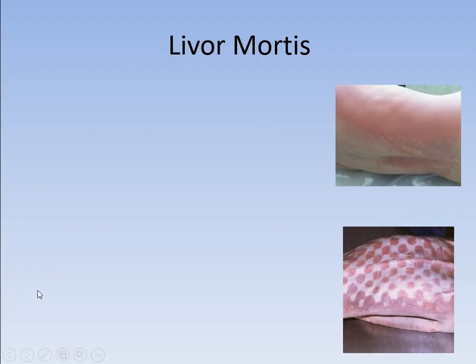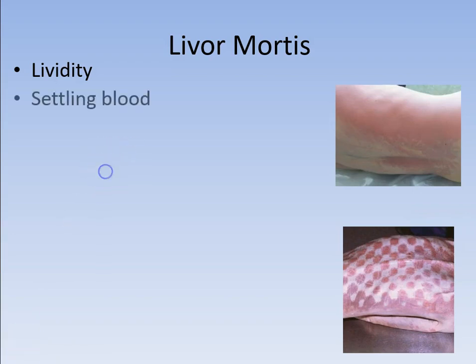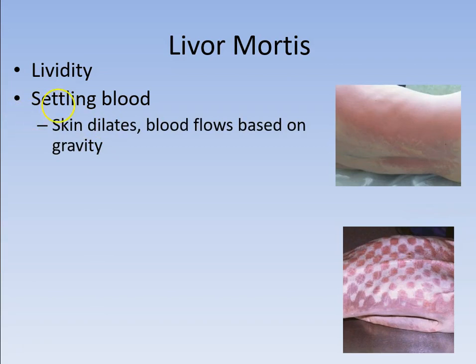Compare that to livor mortis, which has to do with lividity — what happens to the blood, how does the blood settle. While you're alive, your blood runs through your veins and arteries pumped by your heart. When you die and your heart stops, your blood begins to settle. Not only that, but your blood vessels open up a little — your skin dilates — meaning blood can flow more easily through your body and ends up flowing based on gravity.